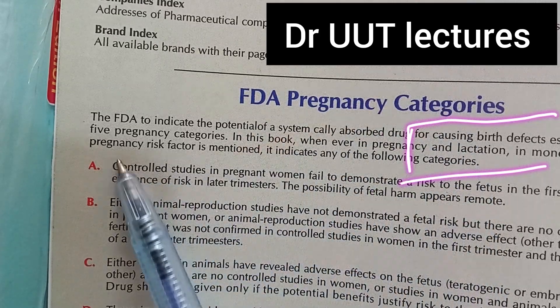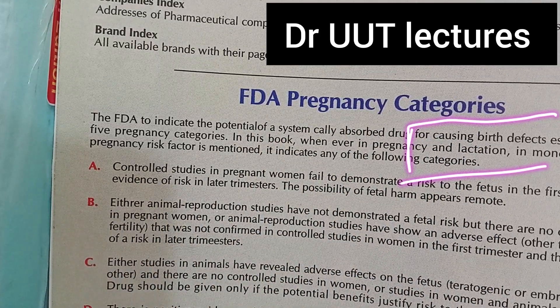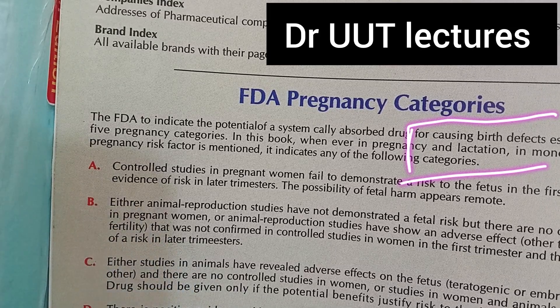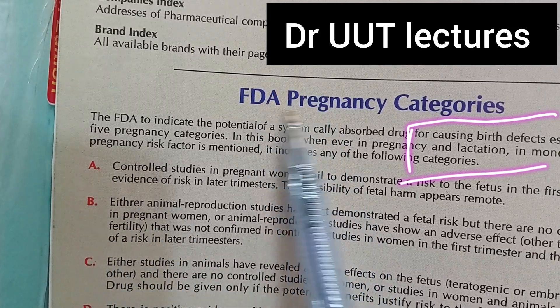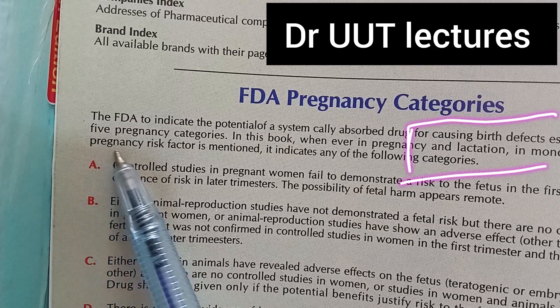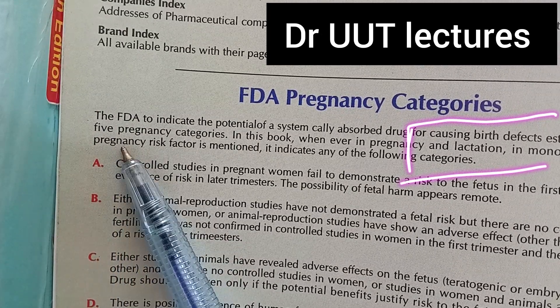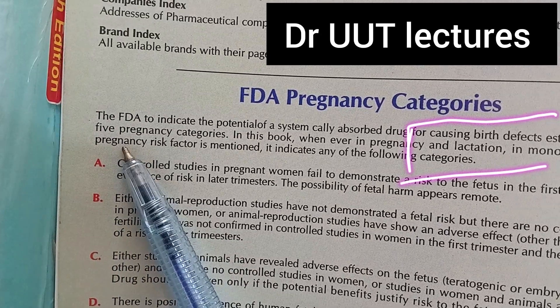We have the following categories: A, B, C, D, and X — five categories in total. FDA categories are actually for the pregnancy risk, that is, whether the medication is safe or not.